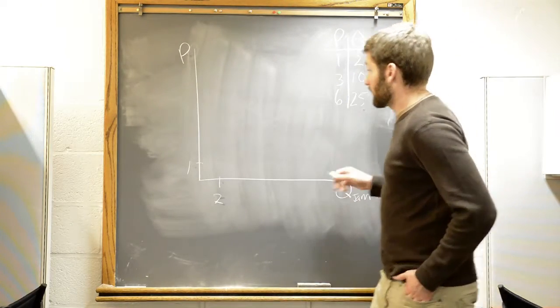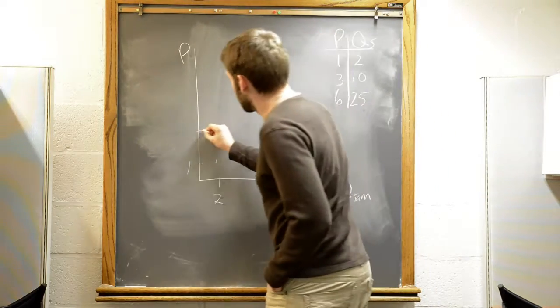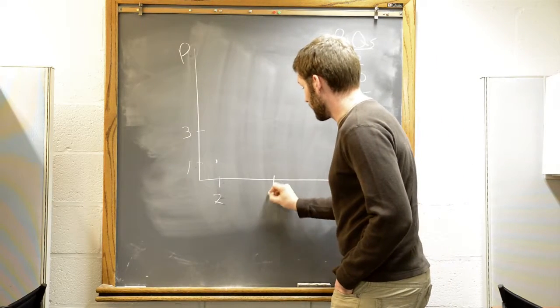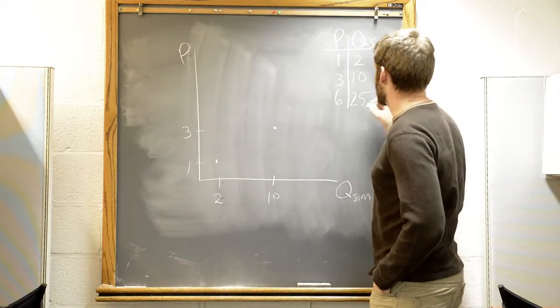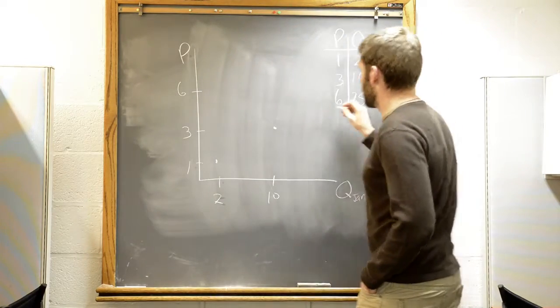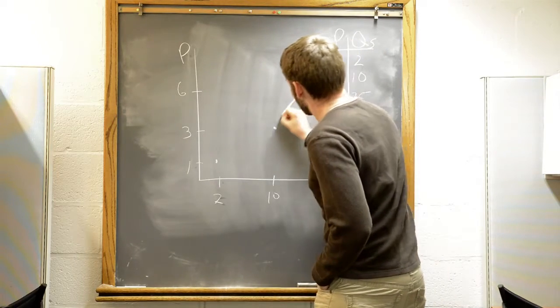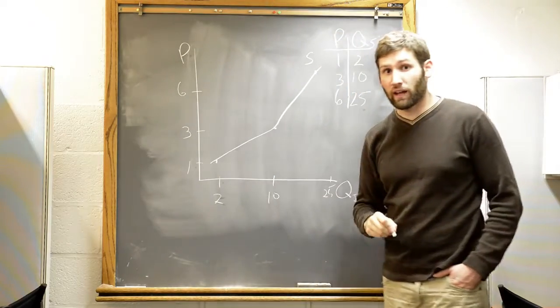So if we add in, we have our point here. However, if we go to 3, and we say that there's a quantity of 10, and then at 6, there's a quantity of 25. You might think it'll look something like this. We can call that the supply curve.